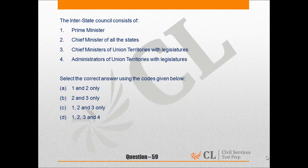Coming back to the question: options one, two, and three are correct, while number four is wrong. Administrators of union territories without legislature are the ones who consist of the Interstate Council — not those with legislature. So number four is wrong, and the answer is option C: one, two, and three only.